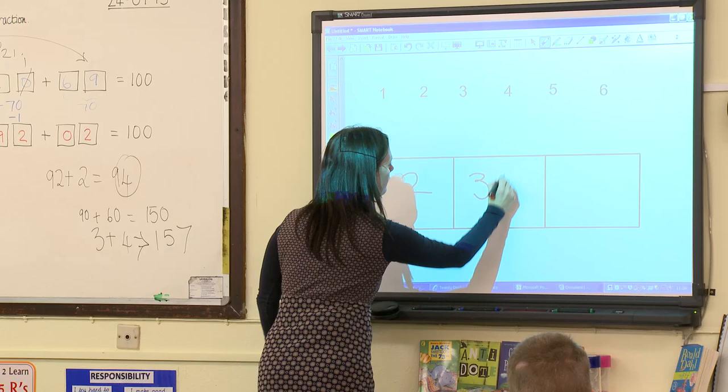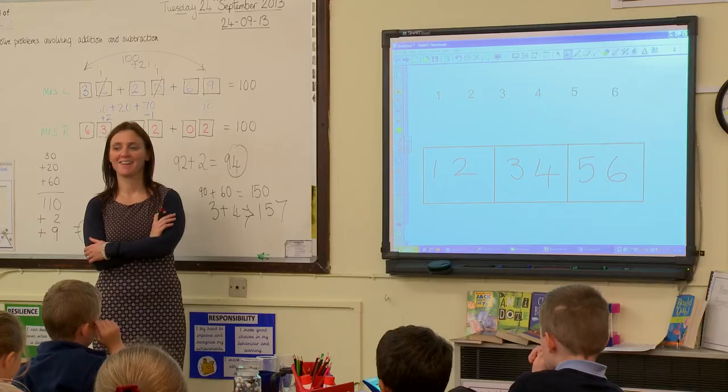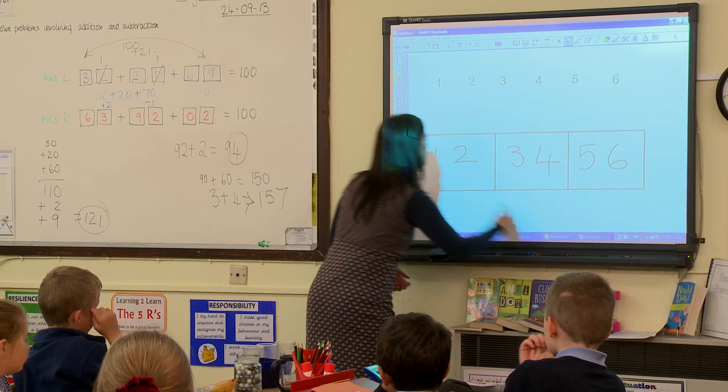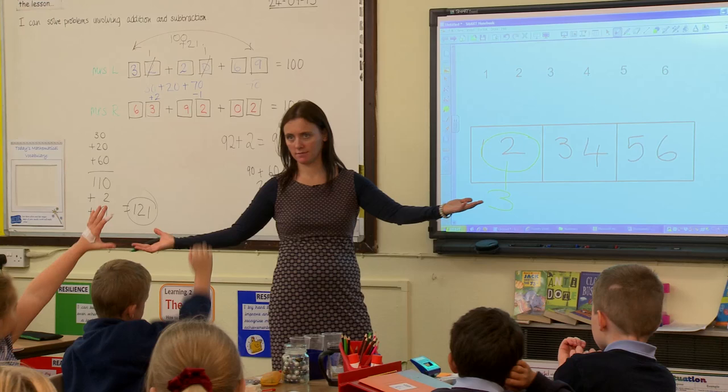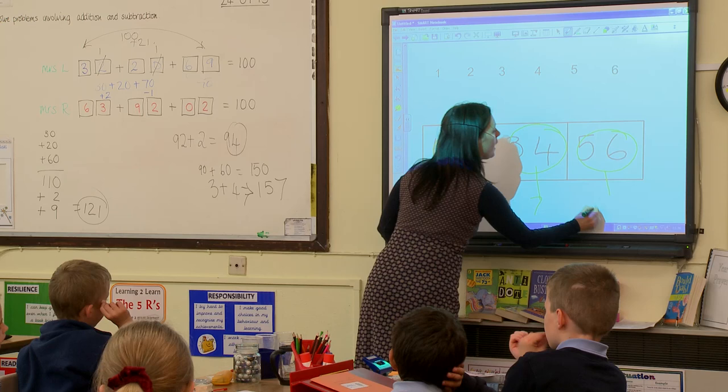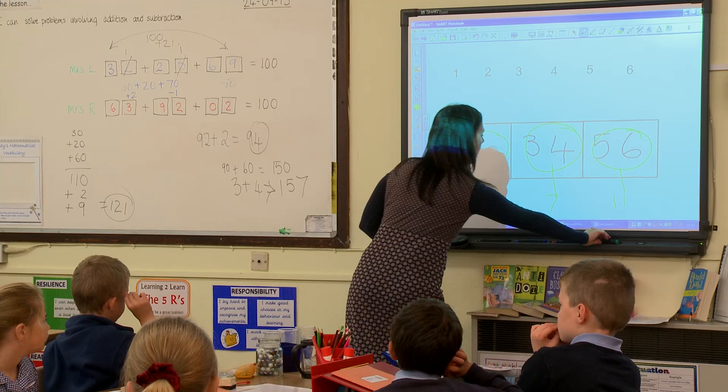To start with, the teacher simplifies the activity. She demonstrates an easier version by creating only 3 piles from 6 cards. 1 add 2 is 3. 3 add 4 is 7. 5 add 6 is 11. Have I got equal totals in those 3 boxes? No. This allows the class to quickly and confidently familiarise themselves with what they're required to do.